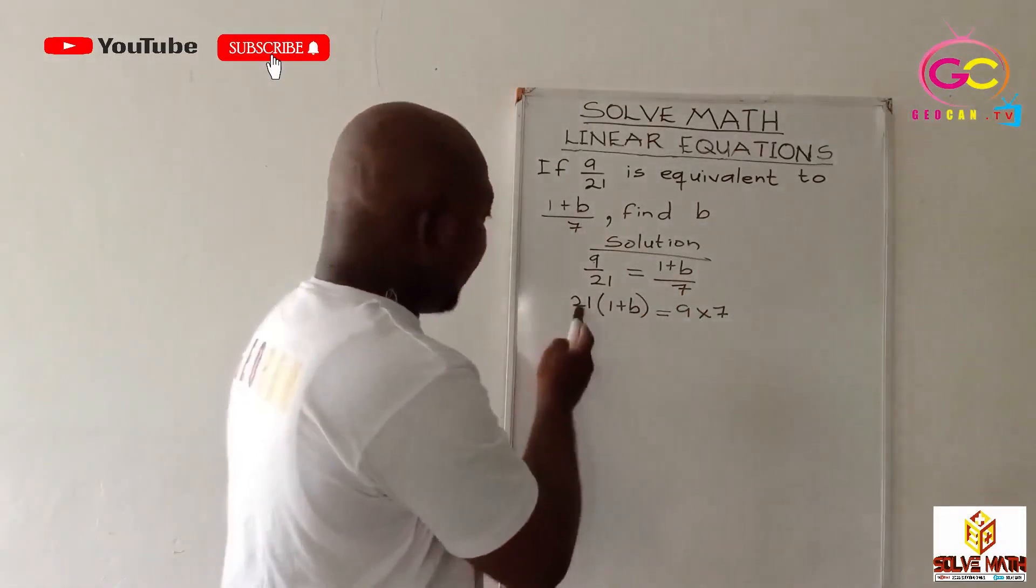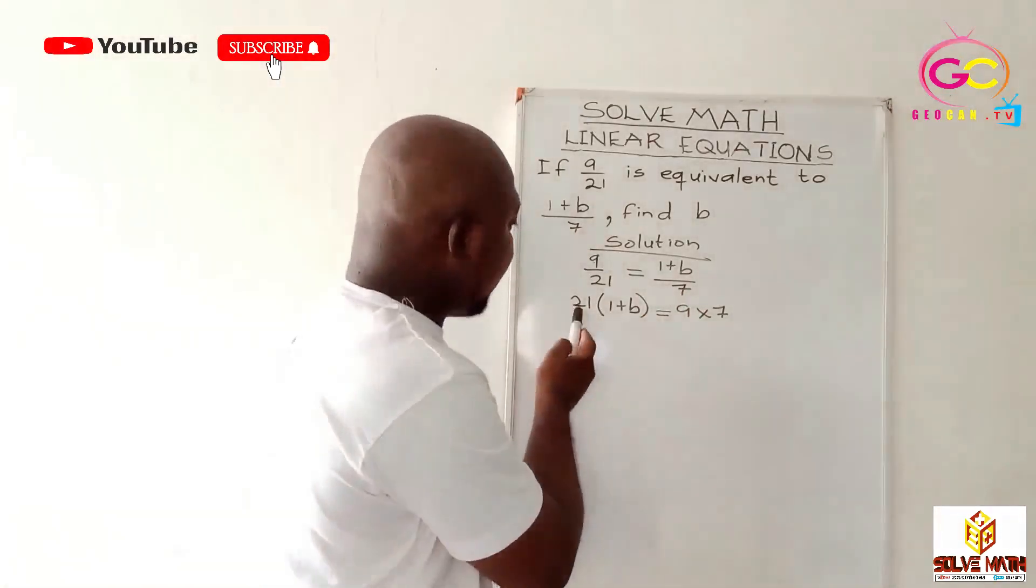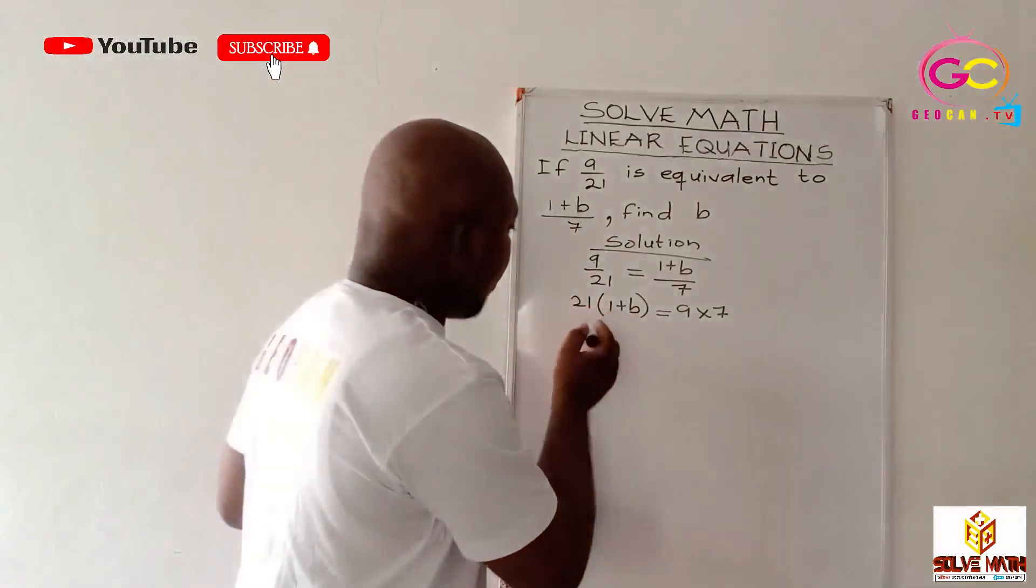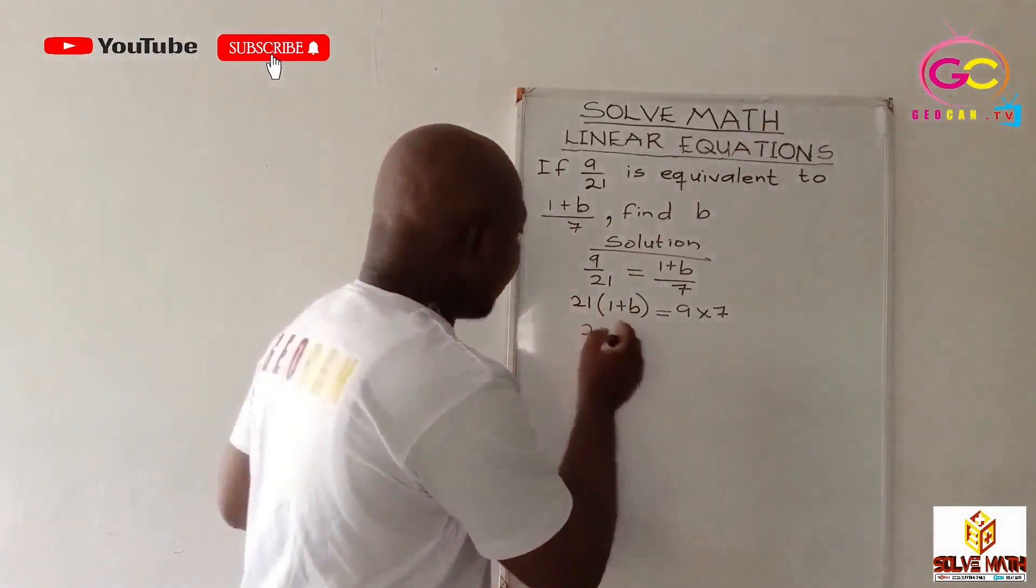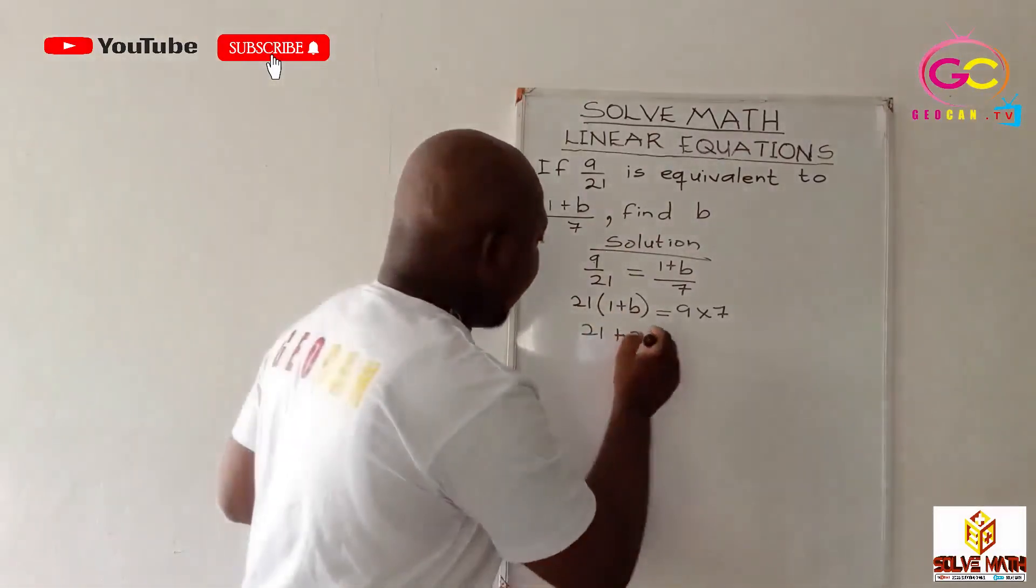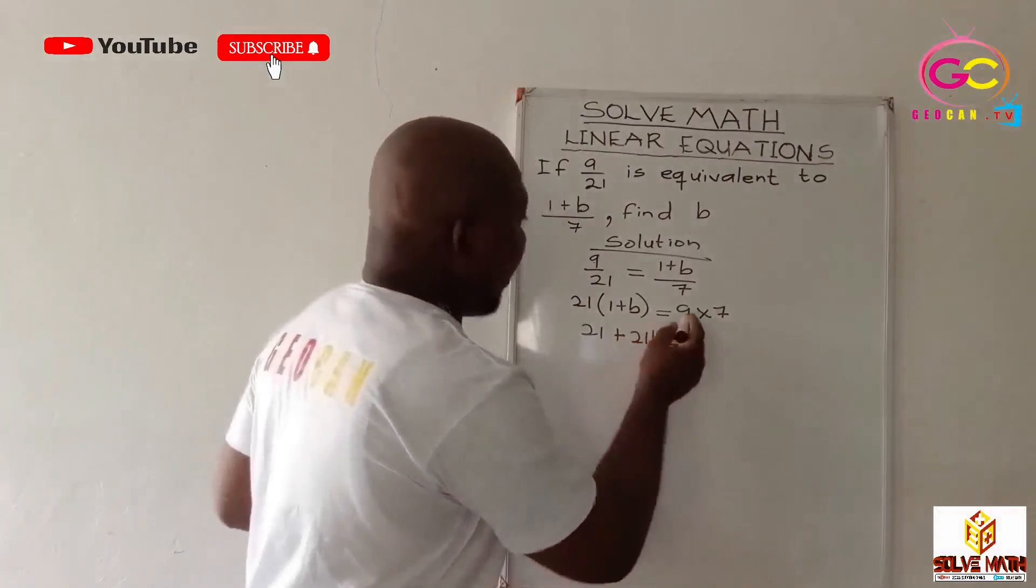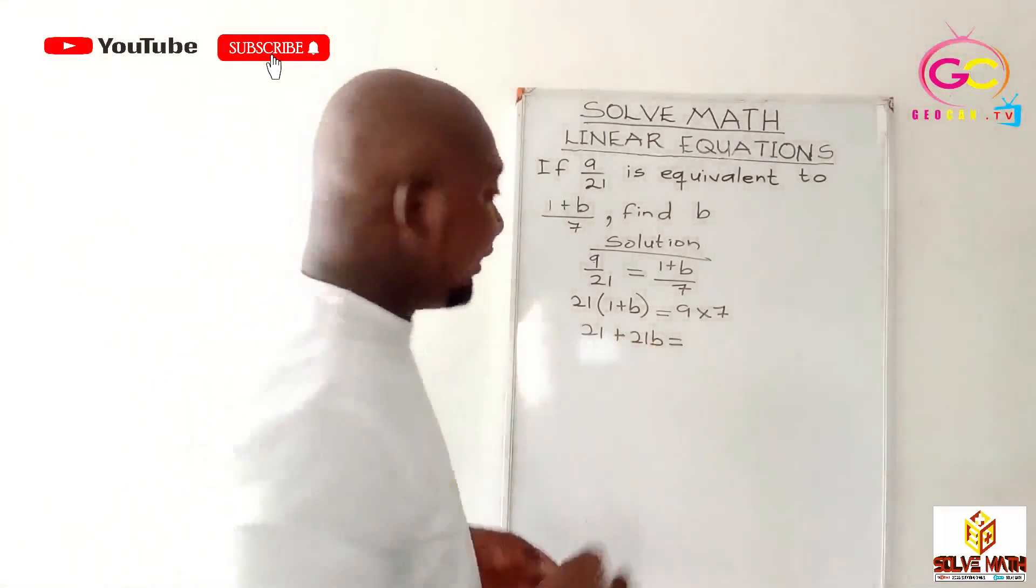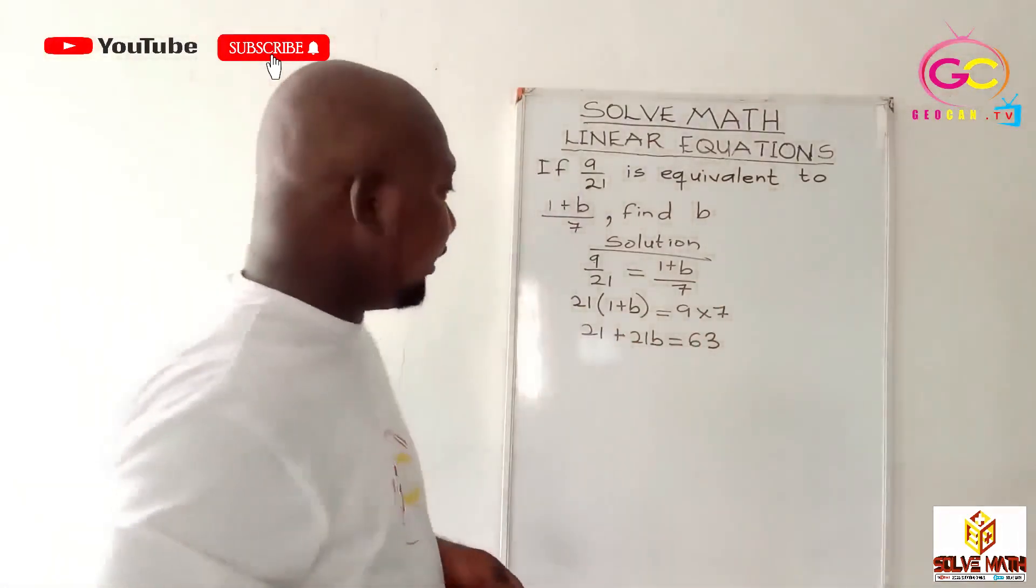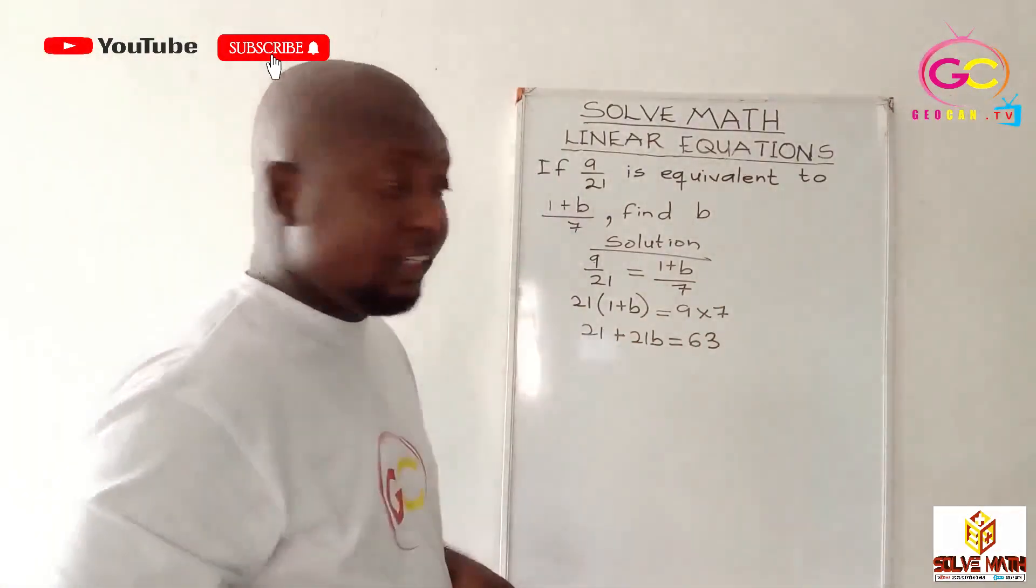21 multiply everything in there. So 21 has to multiply 1 and 21 will multiply the B. So that we can expand it. So 21 times 1 will give us 21 plus 21 times this positive B. So it will give us 21B. We have our equals now 9 times 7. 9 times 7 will give us 60 what? It will give us 60 what? 3. 63. Easy as A, B, C, D.